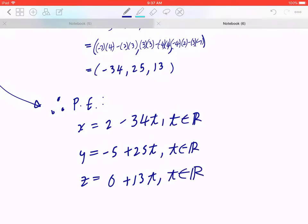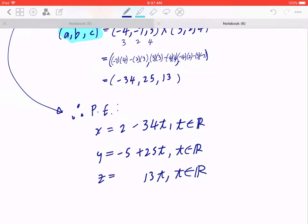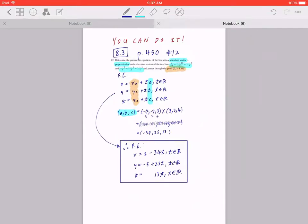Now because 0 + 13t is the same as 13t, you can go back now, erase this, and just leave it like that. So this is the parametric equation of the line. I hope this makes sense.